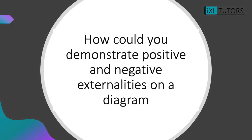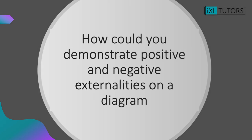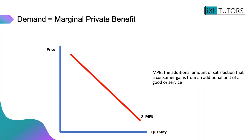Now we're going to look at negative externalities on a diagram, adapting our supply and demand diagram. The demand curve becomes the Marginal Private Benefit (MPB) curve. MPB is the additional amount of satisfaction a consumer gains from consuming an additional unit of a good or service — the more units consumed, the additional satisfaction gained from each extra unit.